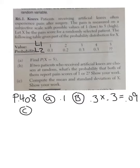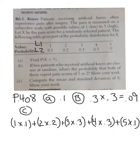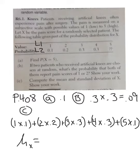Let's see what that looks like. All that number times probability, number times probability — add them all together and you should get an answer of 3.1. So the average pain level is 3.1.